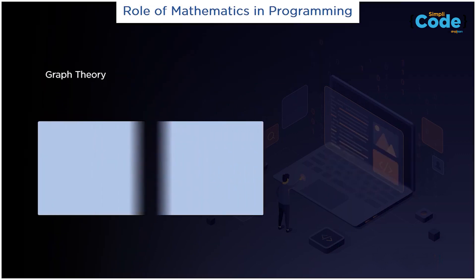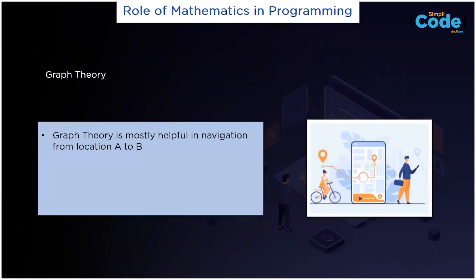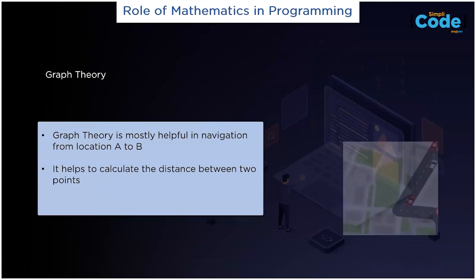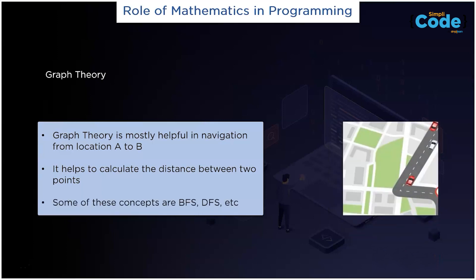Next, we have graph theory. Graph theory is another important tool in programming. Think about Google Maps — it is a giant graph. When you navigate from location A to location B, the underlying algorithms that calculate the shortest distance are backed up by various theorems and proofs of graph theory. Some of the notable ones are Dijkstra's algorithm, depth first search, breadth first search, topological sorting, etc.